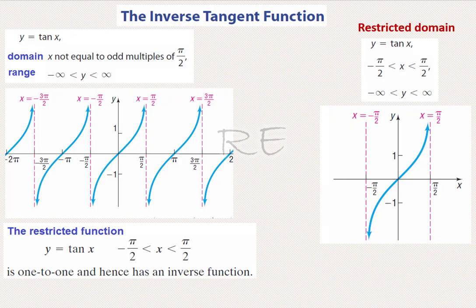The function y = tan(x) does not have an inverse because it is undefined at odd multiples of π/2. If we restrict the domain strictly between negative π/2 and π/2, we obtain a function that is increasing from left to right and is one-to-one.